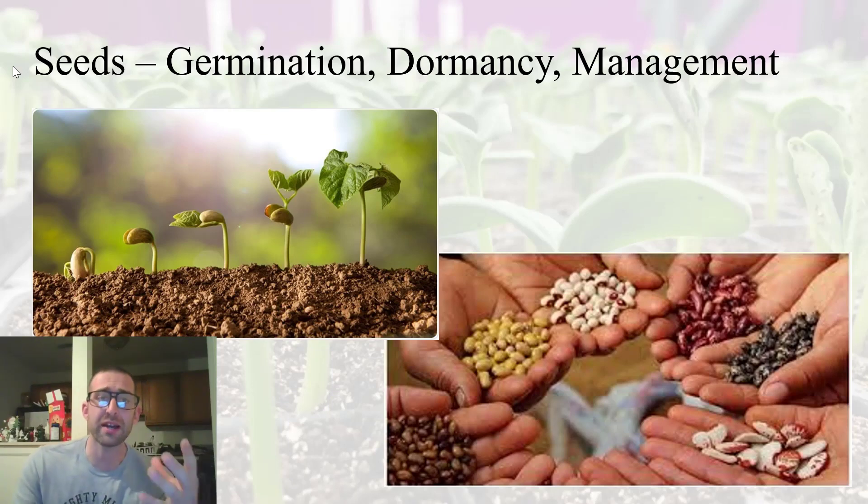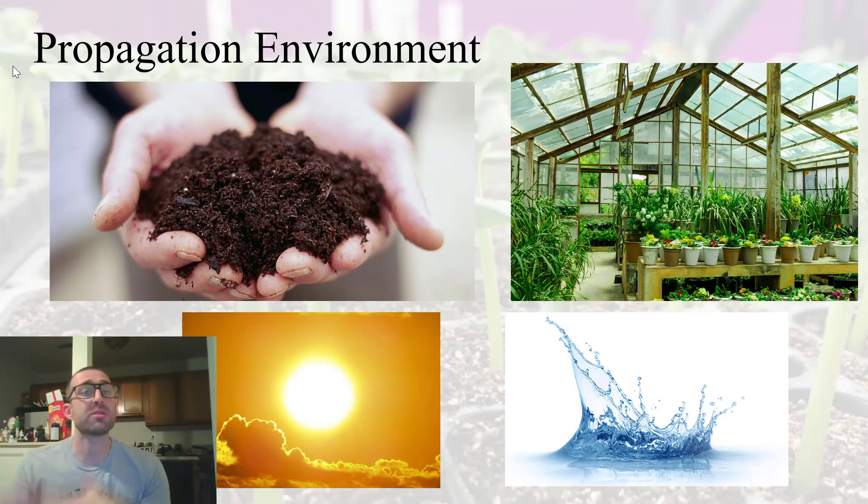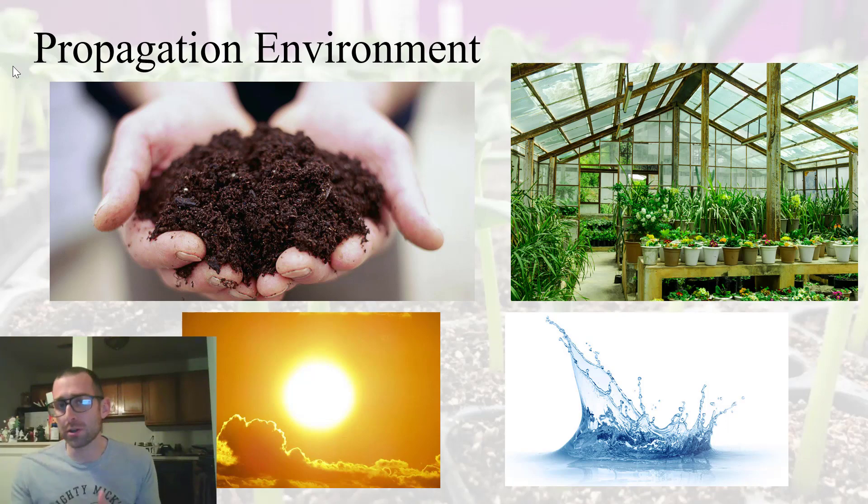And really, along with that, we'll then start talking about the propagation environment. And this includes not just structures that we use, but also the environmental variables that are important for plant growth and development. And they include soil and light and water. And we're going to go into the theory of all these things, so why these are important. But then we're also going to go into the practical aspect of it.